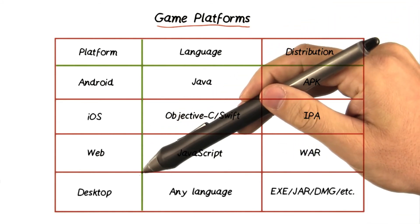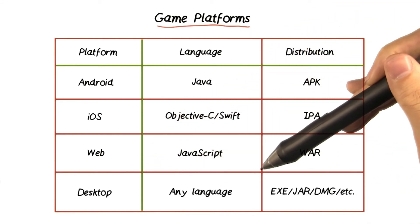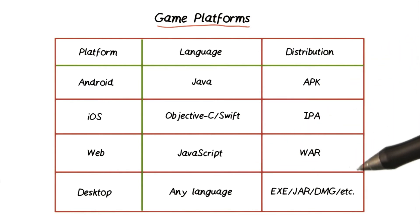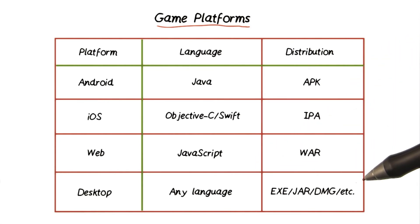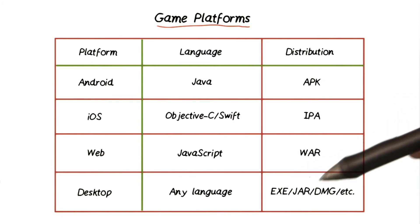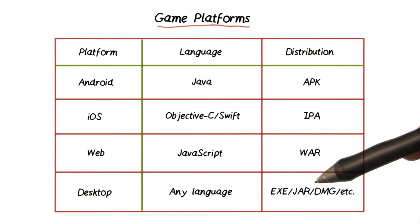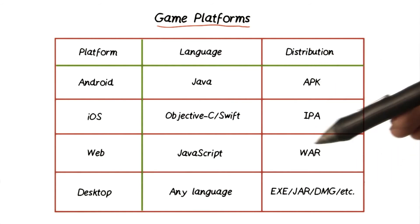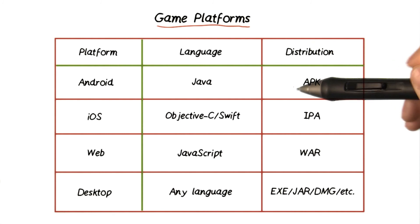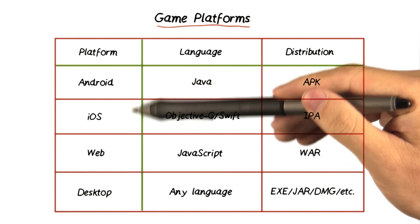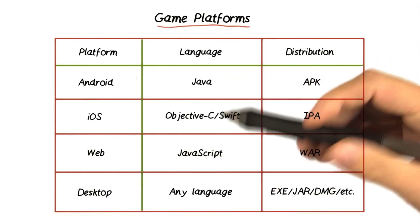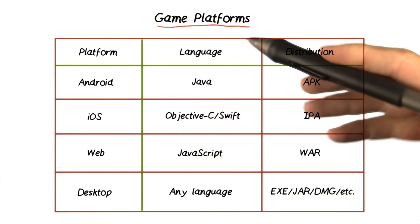Desktop apps can be even more diverse and can be written in any language that runs on a desktop computer, which is pretty much all of them. For distribution, there are a ton of options, including exe files for Windows, jars or executable jars, DMG disk images for Mac, or really anything else. As an indie developer, you would like to make cross-platform games so that you can distribute your awesome new game on as many platforms as possible. But you also don't want to write your game three or four or five times over.